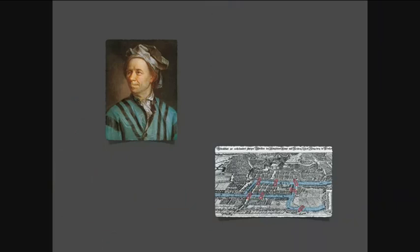Let me introduce you to this guy. Probably you will know him. He is Euler. He was a mathematician from the 18th century, and he is responsible for graph theory. He developed a lot of mathematical work, including graph theory. He used to live in Prussia, in Königsberg.